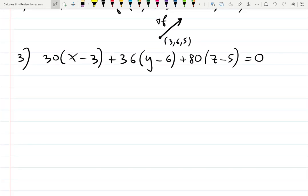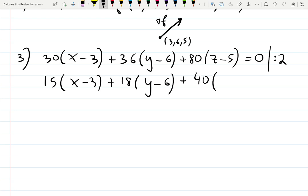Simplify, which means let's distribute everything. It will be 30x minus 90. Actually, I would divide by 2 right away, not to deal with big numbers. That's just a smart move. 15 times (x minus 3) plus 18 times (y minus 6) plus 40 times (z minus 5).